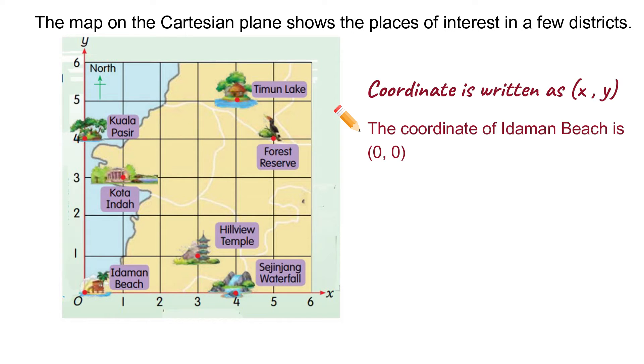Look at Sejinjang waterfall. It lies on the x-axis. That means the coordinate of y is 0. Then, look at the x-axis. Sejinjang waterfall is located at coordinate of 4. Right, the coordinate of x-axis then y. So, the coordinate of Sejinjang waterfall is 4, 0.